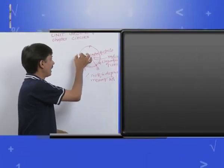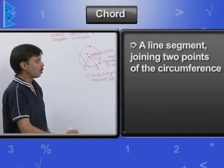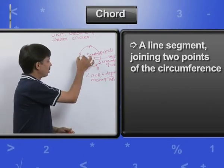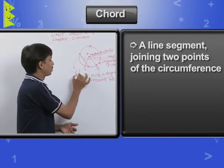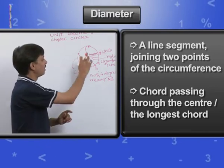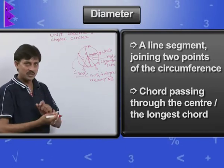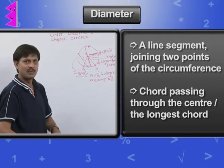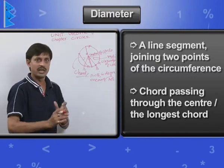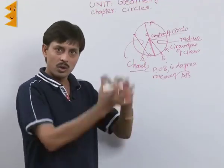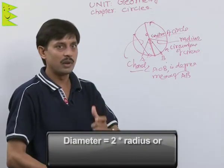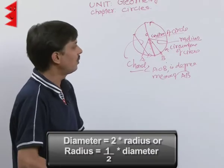Any line segment that joins two points of the circumference is known as a chord. If a chord passes through the center, that chord is known as the diameter of the circle. The diameter is the longest chord. Diameter is double the radius, or equivalently, radius is half the diameter.